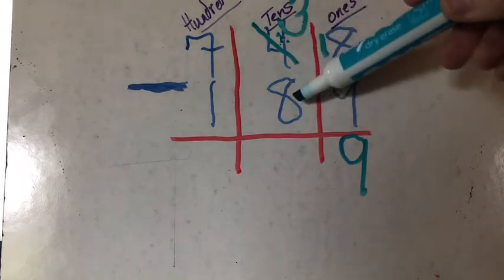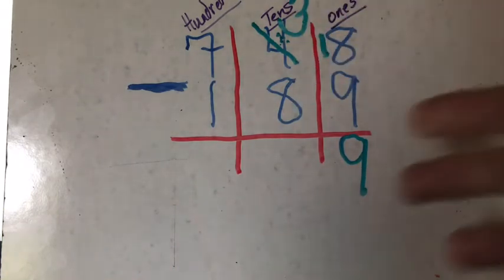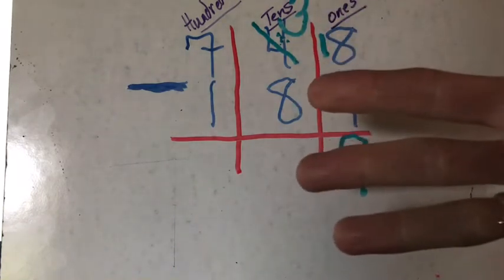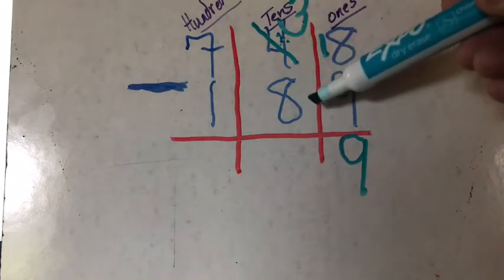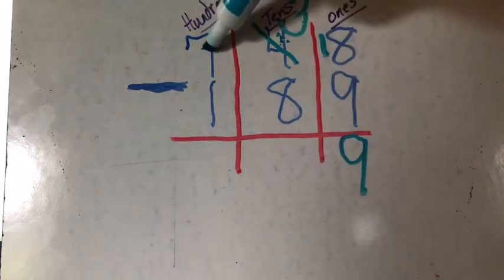3 minus 8. So if I have 3 and I have to take 8 away, I can only take away 3 and then I'm at 0. So if I say 3 minus 8, I'm going to have a negative number again. So I go to my next door neighbor.